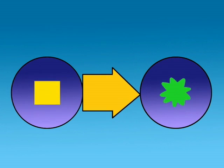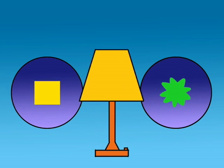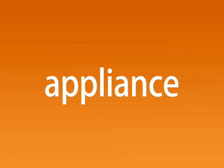There is a name for a thing, like this lamp, that changes energy from one form to another. It's called an appliance.